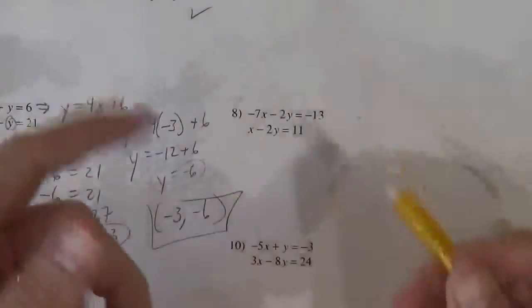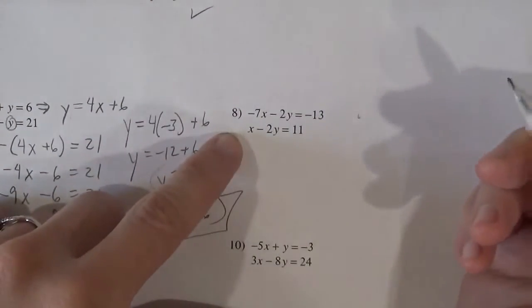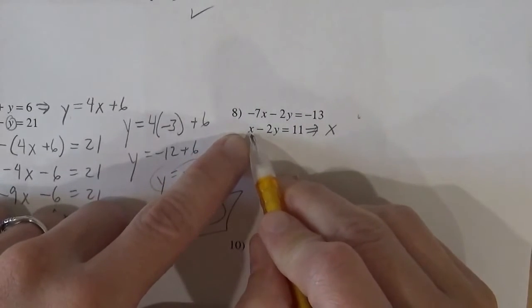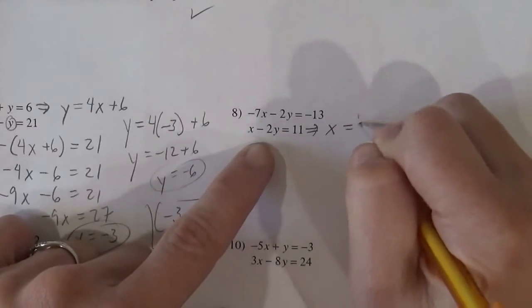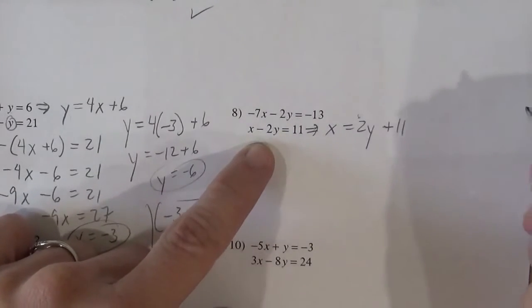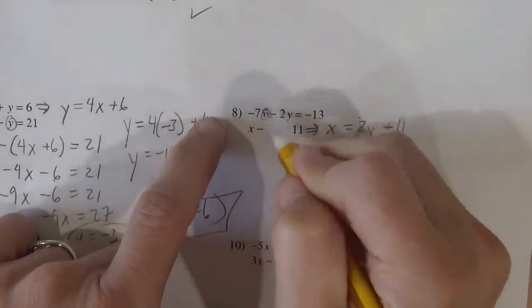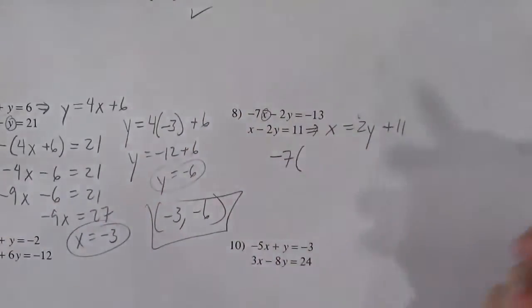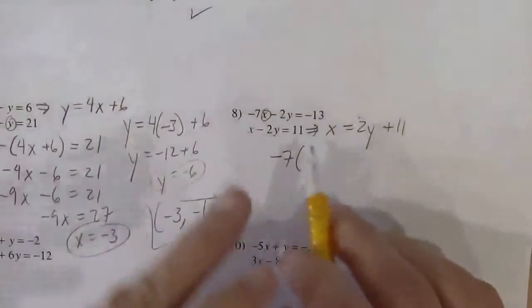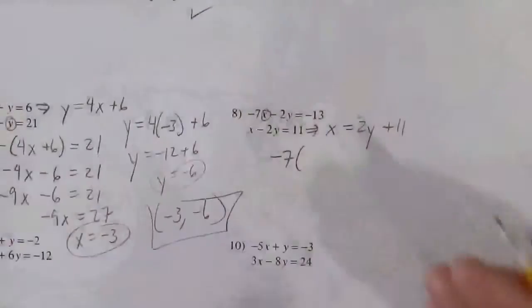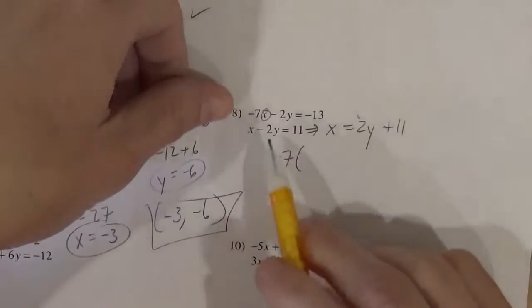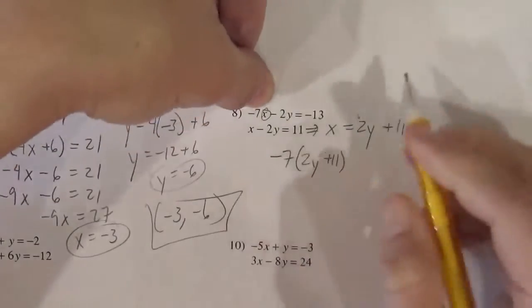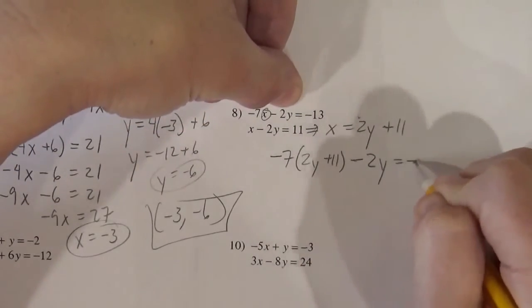In this next one, everything we've done so far has been y equals, but there's no reason why we can't do x equals. This one here, the x is far easier to isolate than the y. So the x will equal 2y plus 11. And then I'll just substitute the x with what it equals. Take your pick. Whichever is the easiest to isolate, do that. So solve for one of them. Solve for x or y. And then substitute it into the other one. That's our gist. So I have negative 7. The x equals 2y plus 11. So I substitute that in. And then minus 2y equals minus 13.